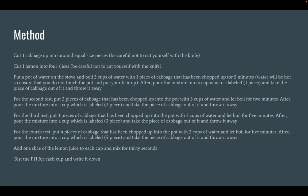The method: cut one cabbage up into equal size pieces — be careful not to cut yourself with a knife. These pieces should be as equal as you can get them. Then cut one lemon into 4 slices. Put a pot of water on the stove with 3 cups of water in it, and put one piece of cabbage in there, sliced into much smaller pieces. They should be around the same size and consistent for all 4 tests. Then boil this mixture for 5 minutes. Water will be very hot and so will the pot, so be sure not to touch it, and put your hair up.